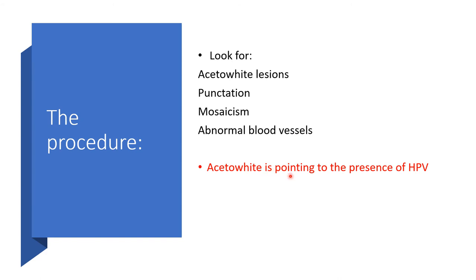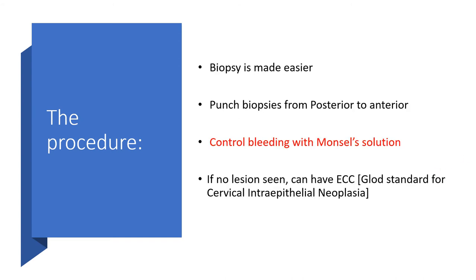When an acetowhite area is present, that points to the presence of human papillomavirus. A biopsy will then be done — punch biopsies are taken from posterior to anterior — and we control bleeding with Monsel's solution. If no lesion is seen, we can proceed with endocervical curettage, which is the gold standard for cervical intraepithelial neoplasia.